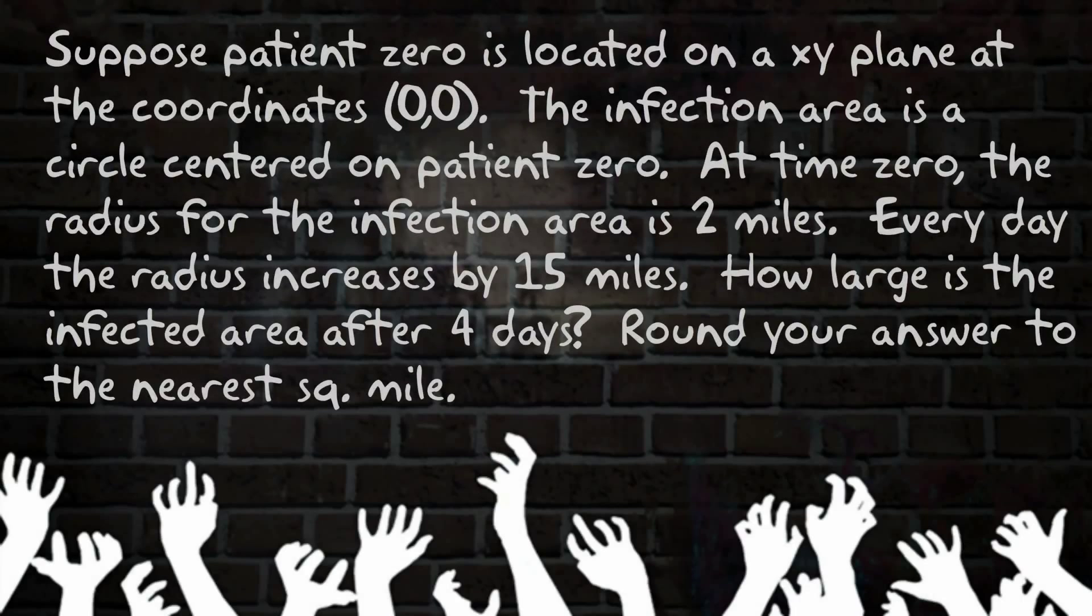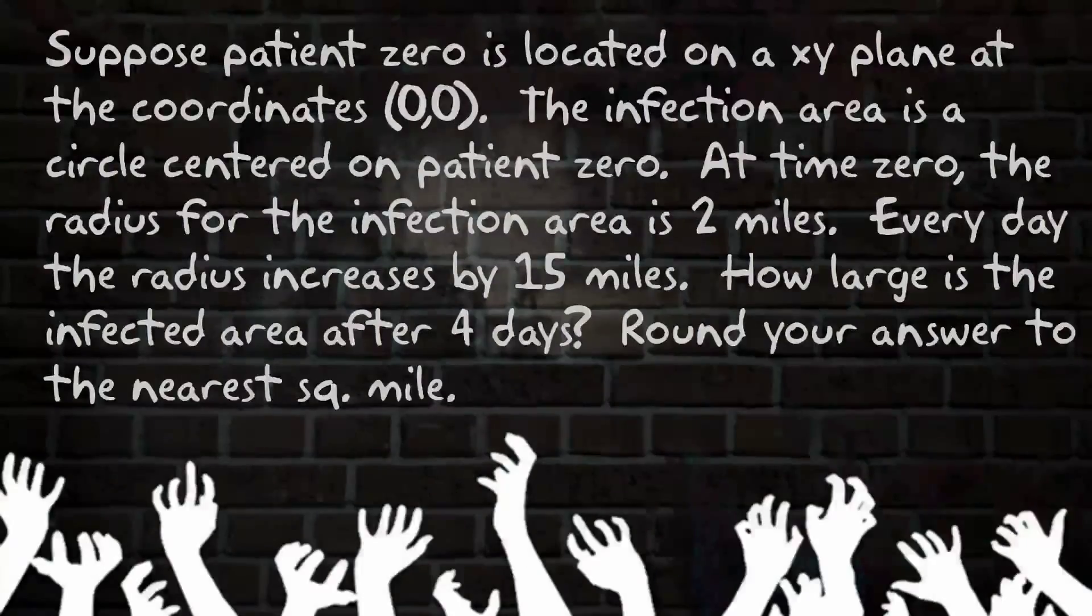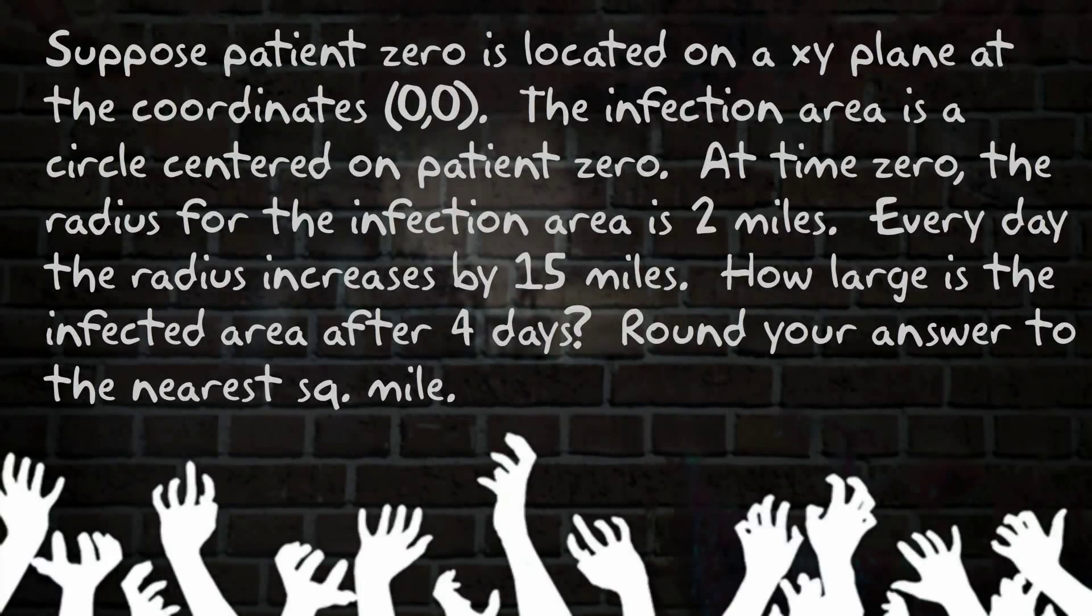Suppose patient 0 is located on an xy plane at the coordinates (0,0). The infection area is a circle centered around the patient. At time 0, the radius for the infection area is 2 miles. Every day the radius increases by 15 miles. How large is the infected area after 4 days? Round your answer to the nearest square mile.